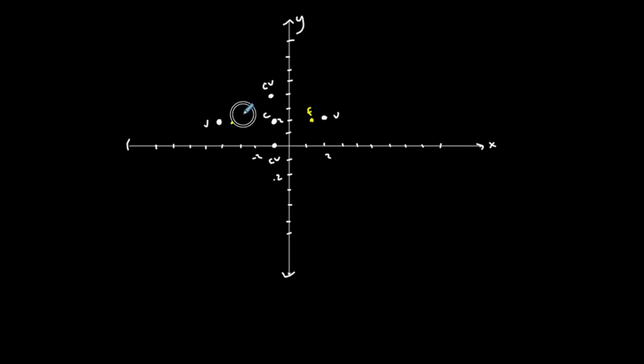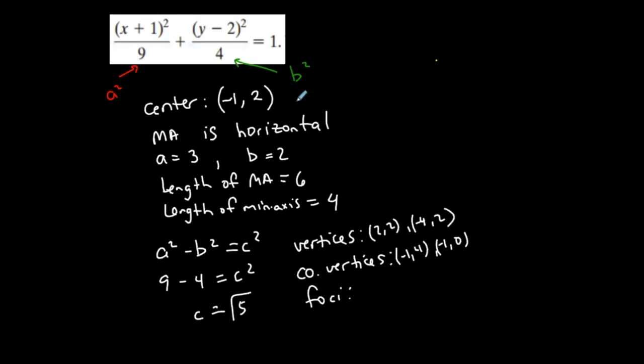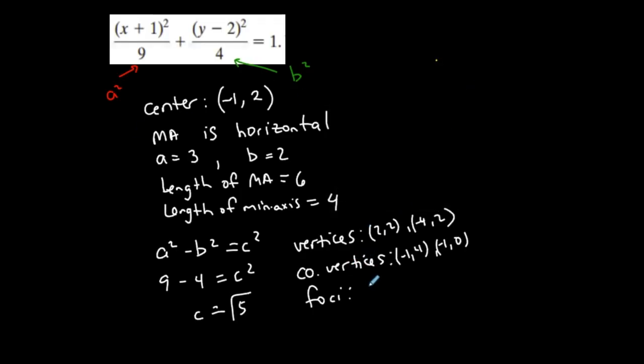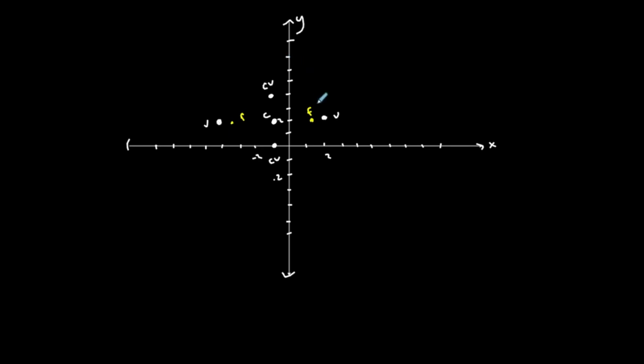So what is changing? My x or my y? To get from the center to each focus, I'm counting to the left and to the right. So my x-coordinate is going to change. So I'm adding and subtracting the square root of 5 to the x-coordinate of the center. The y-coordinate is not changing because I'm moving along the major axis. And now I can graph.